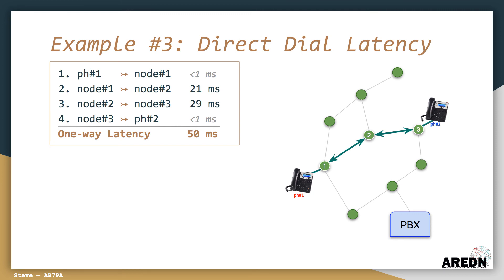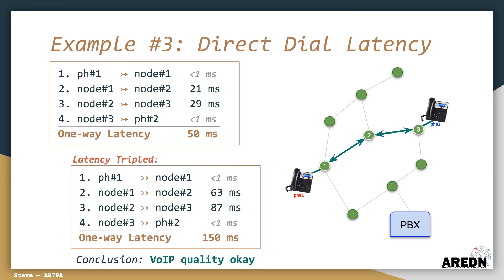As before, you can use the ping and traceroute tools on your Arden nodes to trace the network route and measure the average one-way latency between nodes. In this example, there are only four hops in the network path. The latency between nodes one and two is 21 milliseconds, and between nodes two and three is 29 milliseconds, so the average one-way latency is around 50 milliseconds. This tells us that VoIP call quality should be fine. But what if we double or even triple that latency? This example shows that even if we triple the latency, the call quality should still be acceptable.